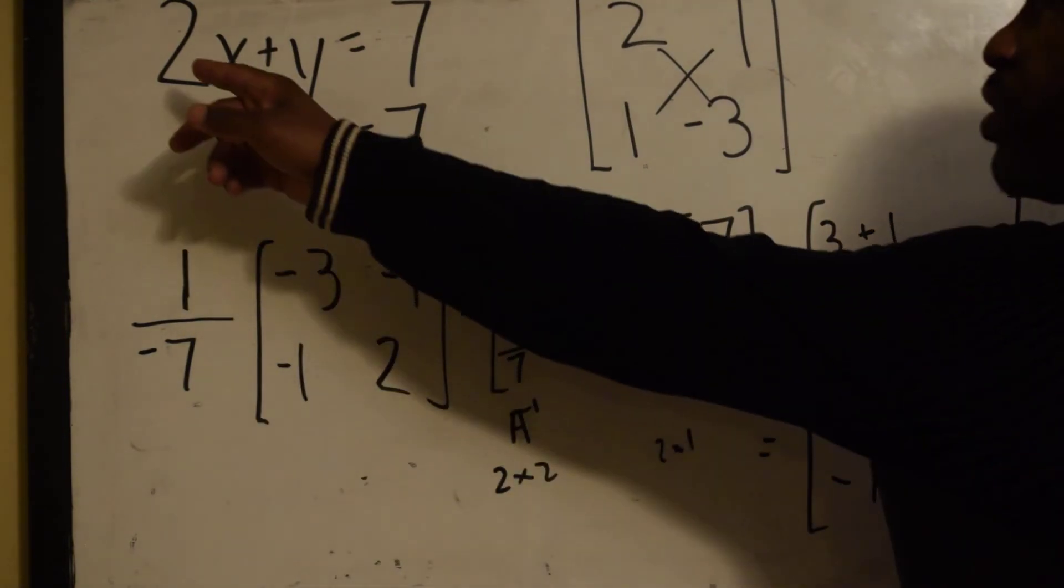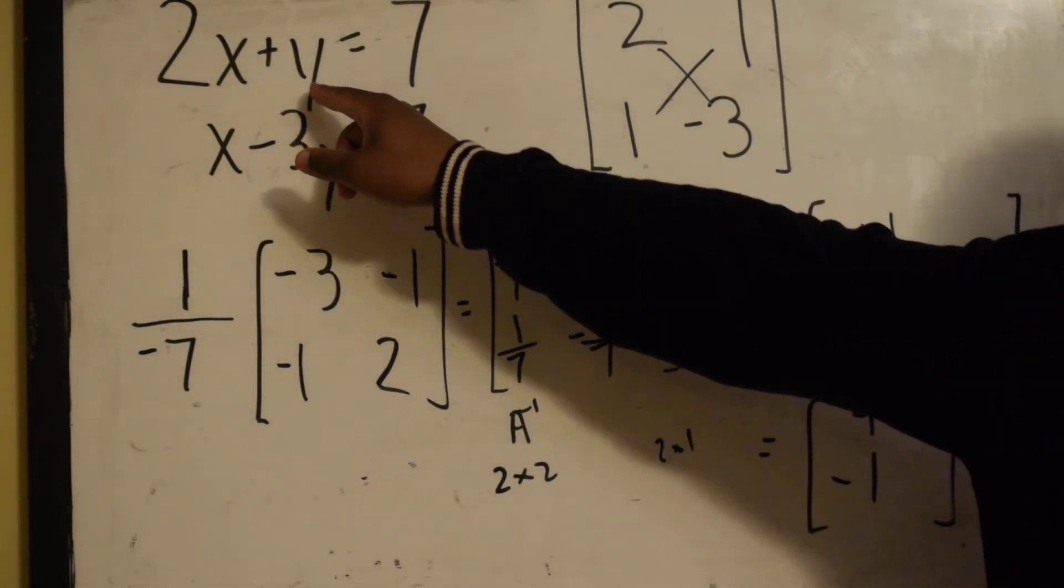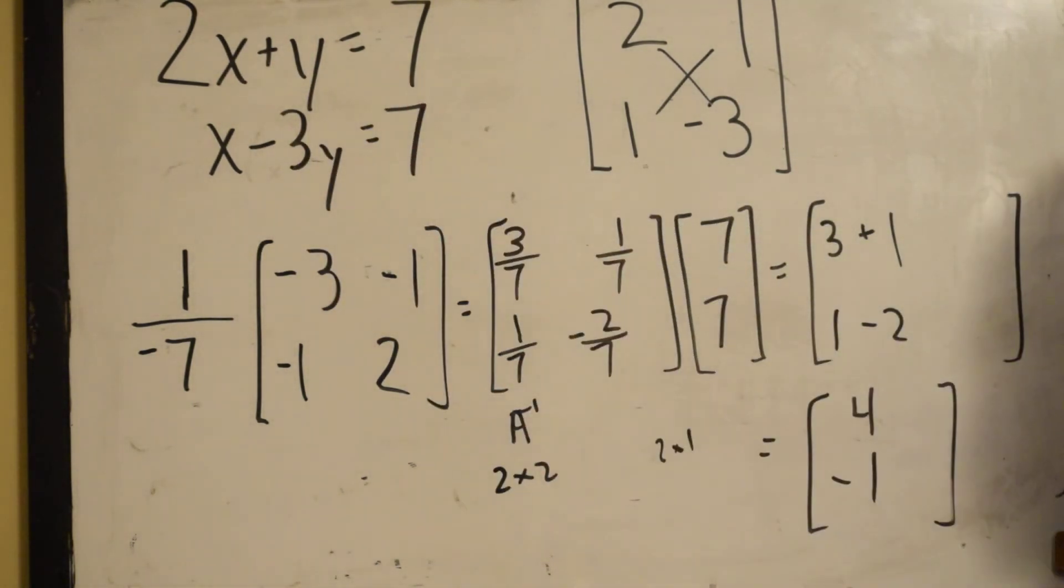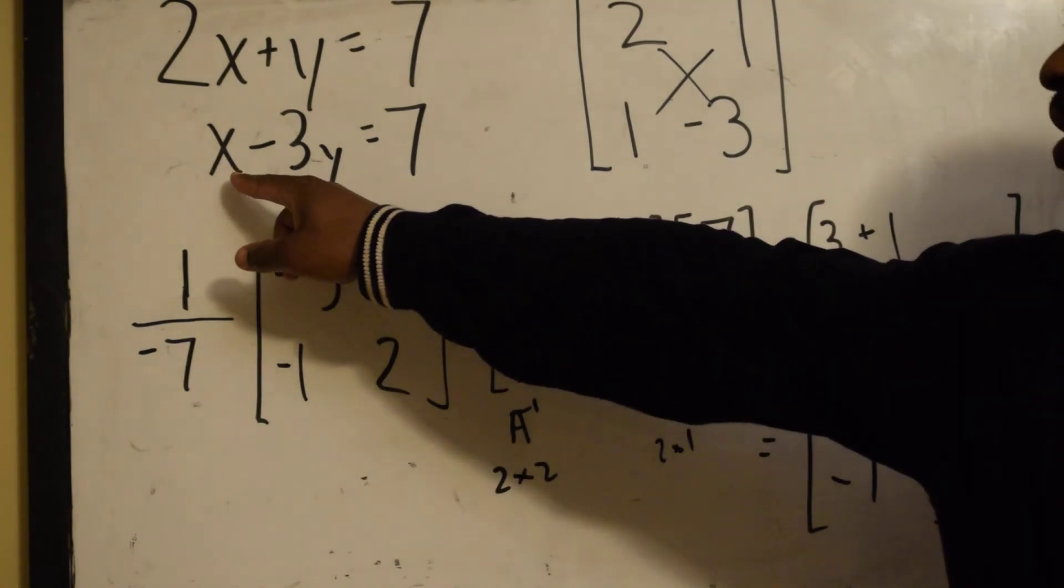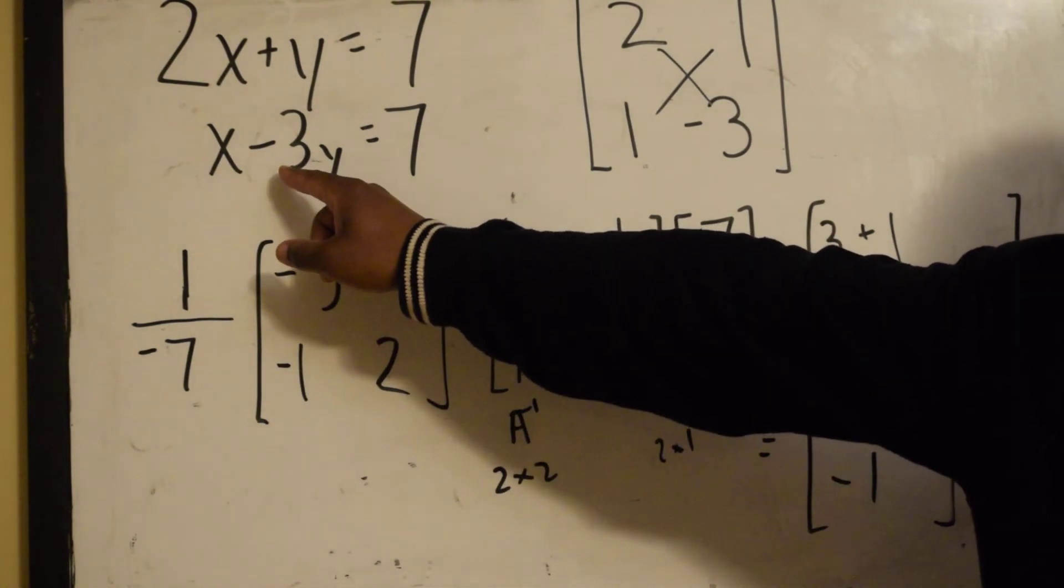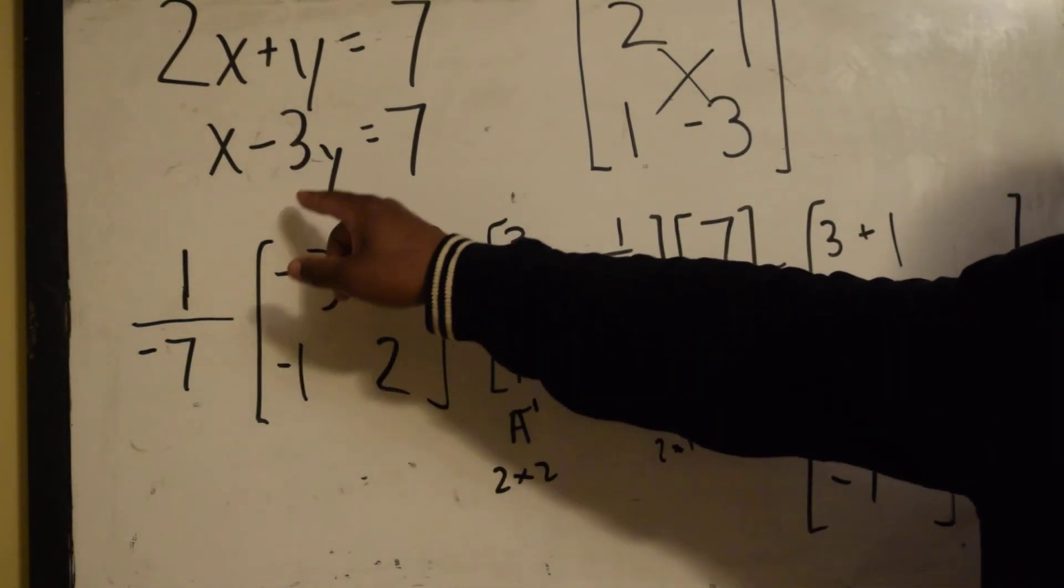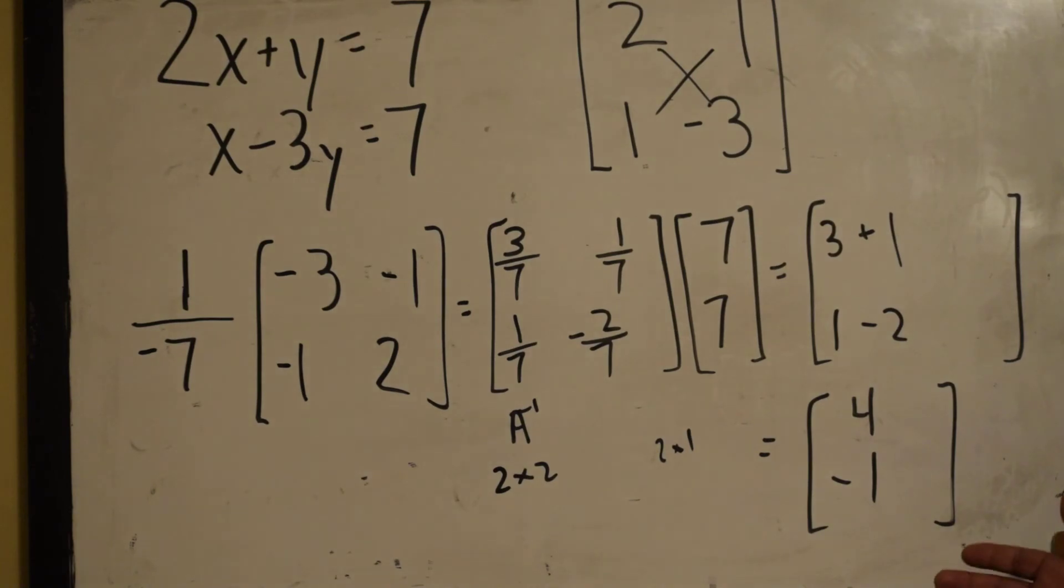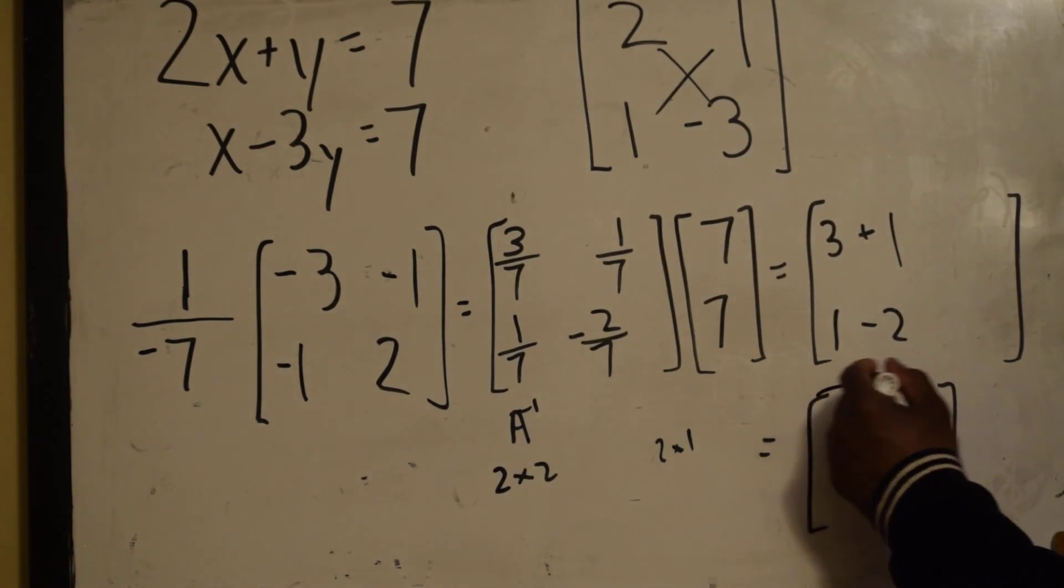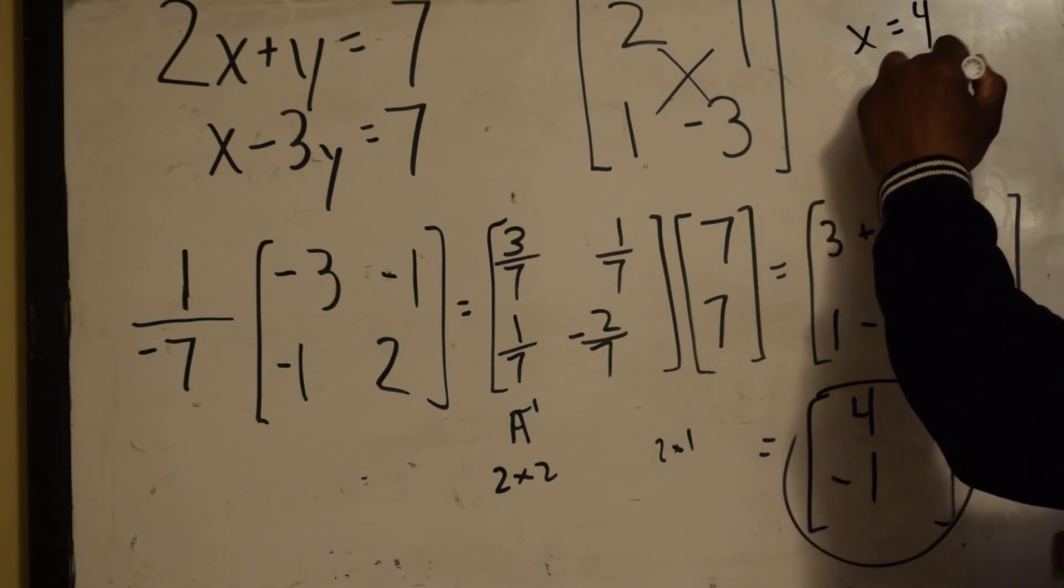Let's see, is that true? 2 times 4 is 8, y, 8 minus 1 is 7. That is 4. If we put x in for 4, minus 3 times negative 1, 4 minus a negative 3 is equal to 7. So we have that to be our solution. X is equal to 4, y is equal to negative 1.